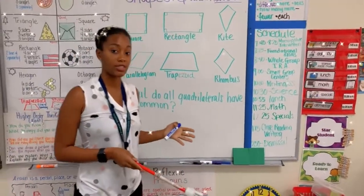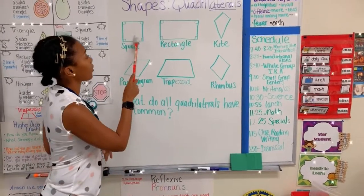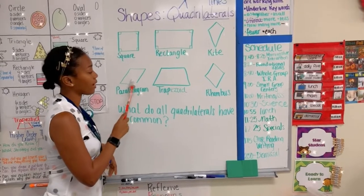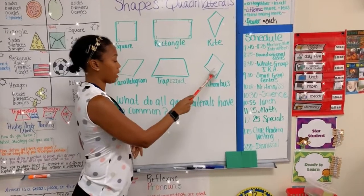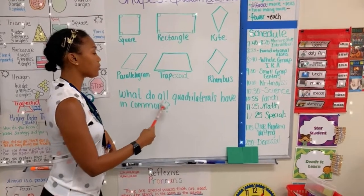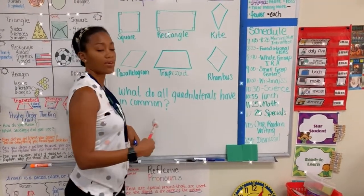Let's first identify each shape. We have the square, the rectangle, the kite, parallelogram, trapezoid, and the rhombus. Our job today is to see what do all the quadrilaterals have in common.